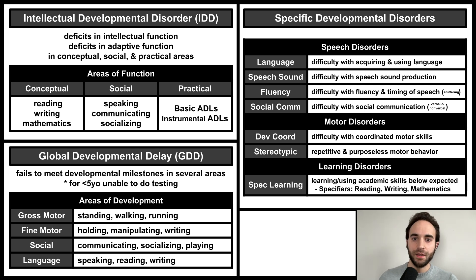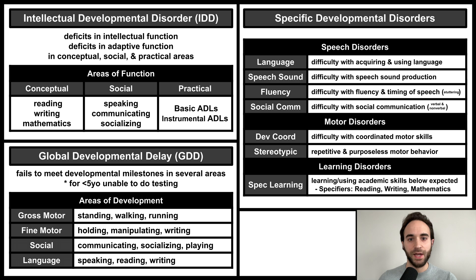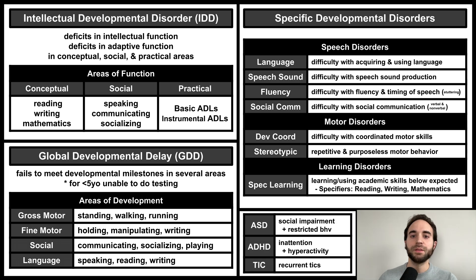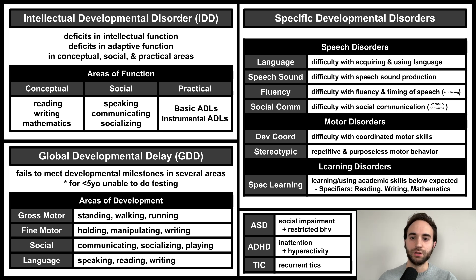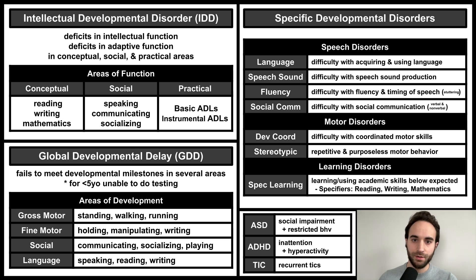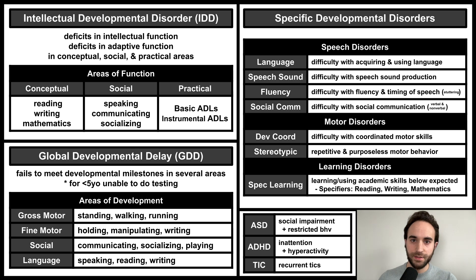Finally, specific learning disorder involves learning and using academic skills below the level expected for the patient's age. This can be specified as problems with reading, writing, or mathematics. These are the main disorders covered in this talk, but there are three other categories of neurodevelopmental disorders covered in other talks: autism spectrum disorder, attention deficit hyperactivity disorder, and tic disorders.